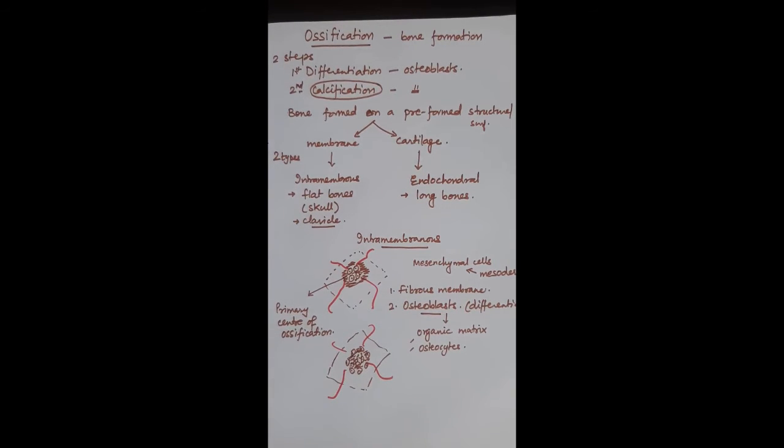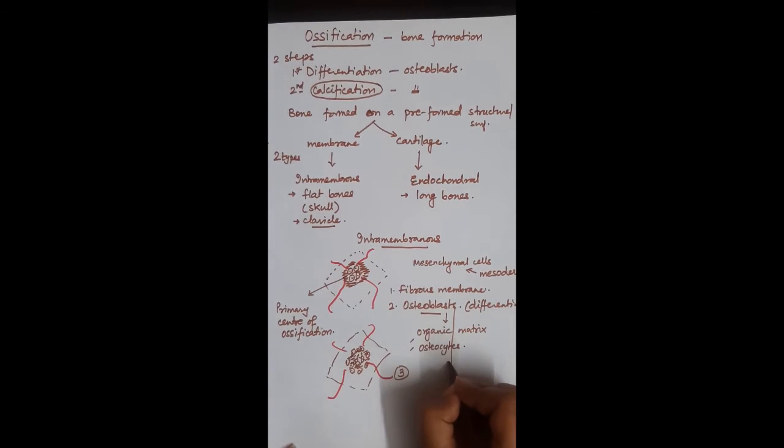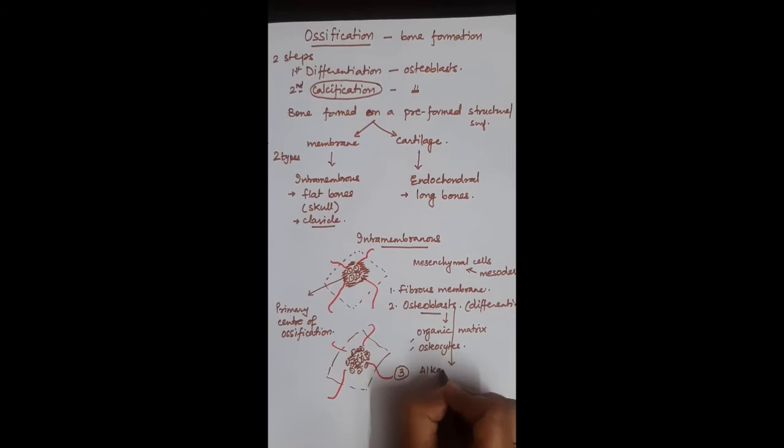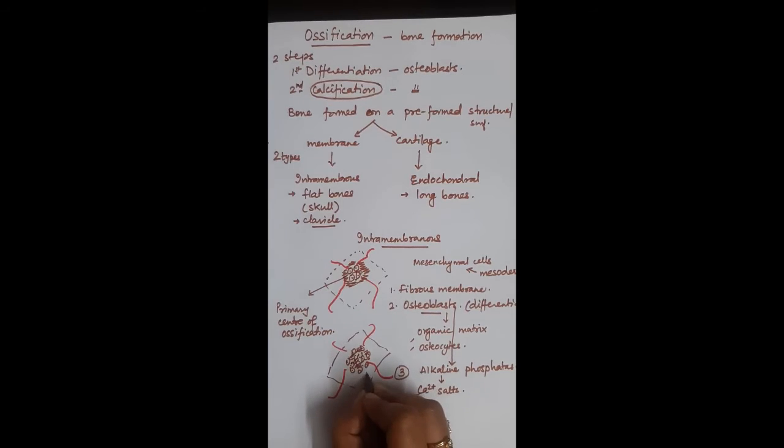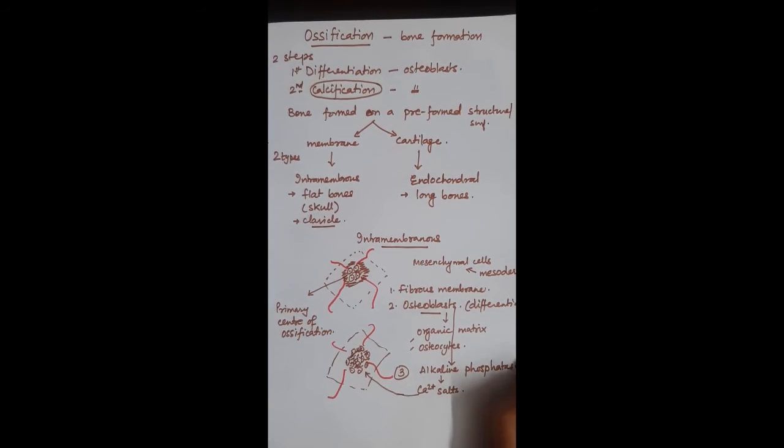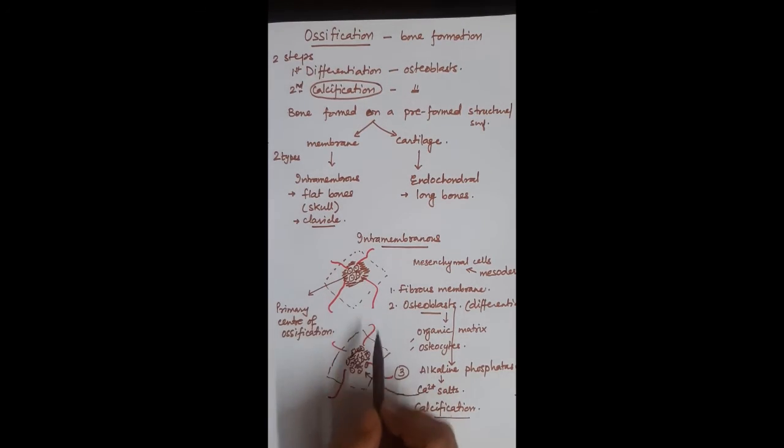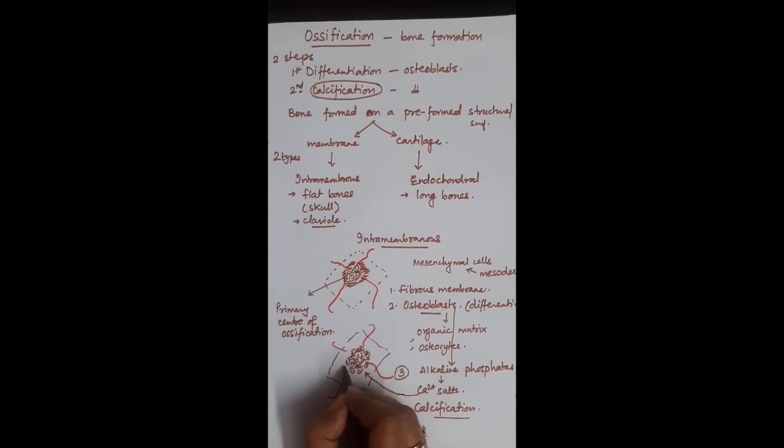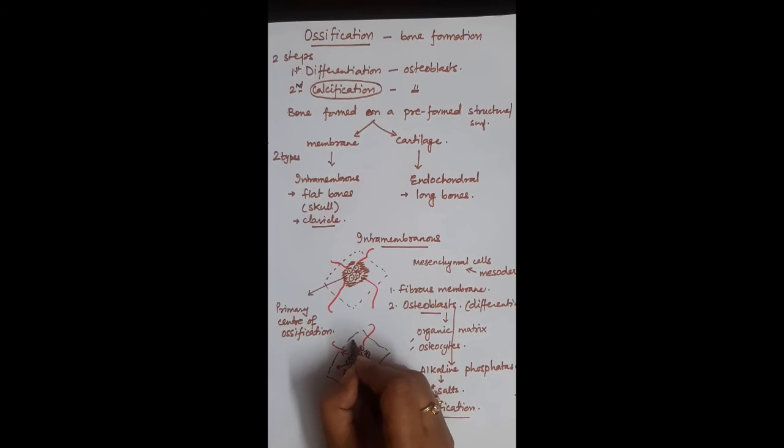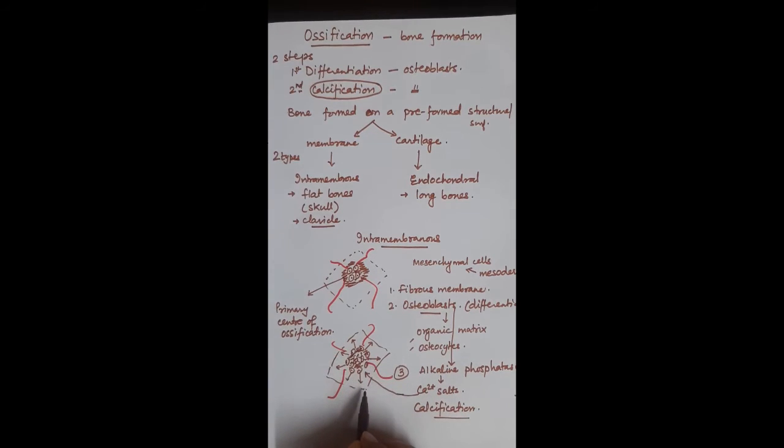Now another thing which these osteoblast cells do is they secrete an enzyme alkaline phosphatase. This alkaline phosphatase enzyme helps in calcium salts deposition within this organic matrix. That means it is responsible for calcification of the bone matrix. So this is how the ossification has taken place. The ossification keeps on increasing, that means more and more membranous tissue converts into bone by radiating in different directions by the actions of osteoblasts.